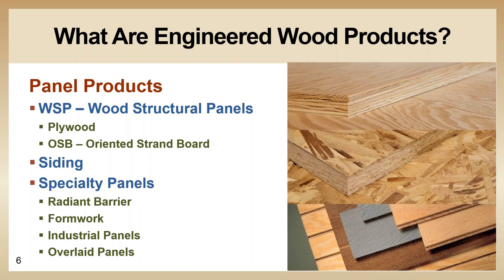APA originally stood for the American Plywood Association. Oriented strand board was invented in 1965 — at that point it was called wafer board. During the 1970s, the plywood lumber supply dropped and OSB became much more popular. Over the years, these panel products have expanded to include more specialized products, and we'll touch on a few of those today.